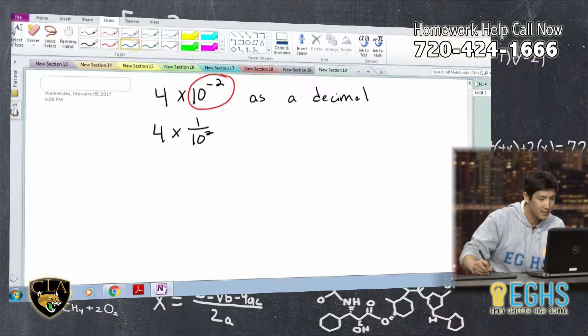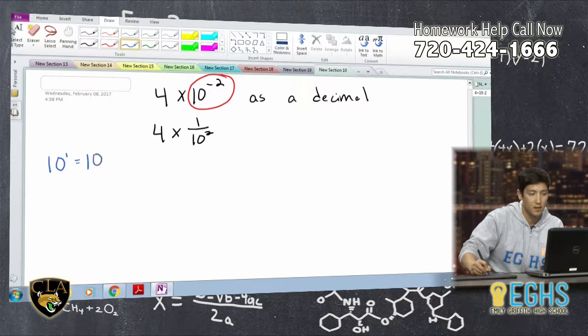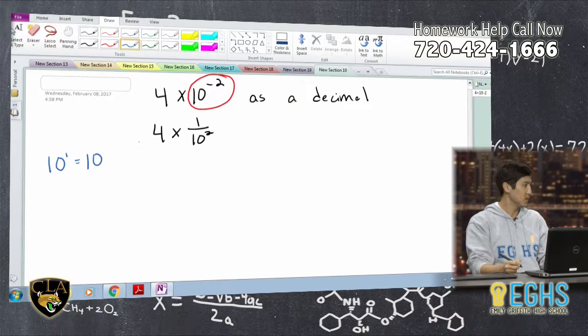And if we just write it out, it kind of makes it a little more clear, right? So if I say like I got 10 to the power of 1, well, that's just 10, right? Because we're just saying 10. One of them.